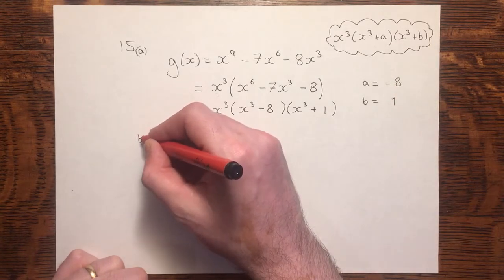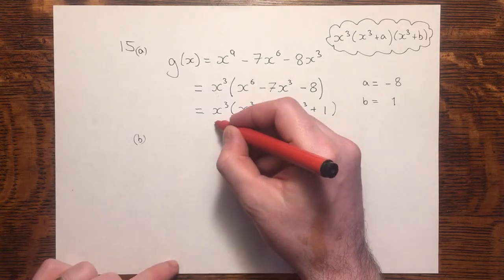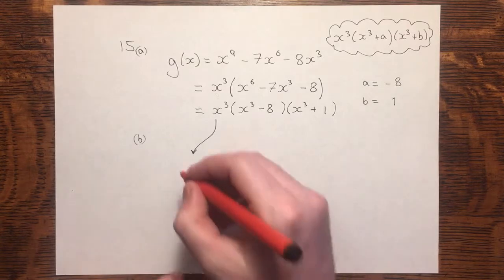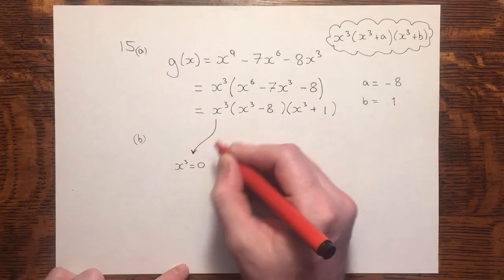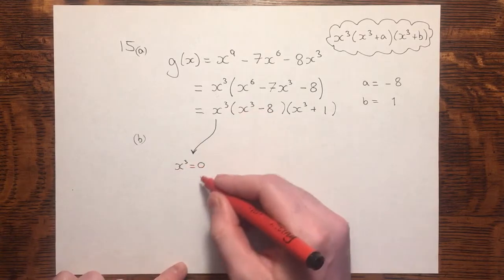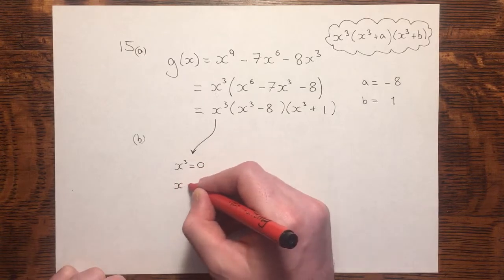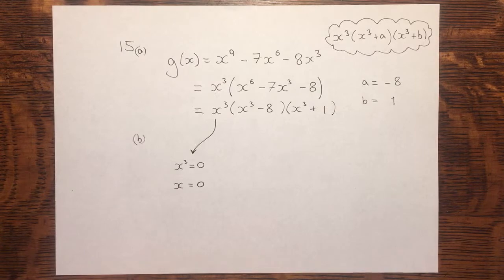In part b, the question says, hence find the three roots of g of x. x cubed is one of the factors. Therefore, if x cubed equals 0, then we can solve for x. We know the factors equal 0 when we're finding the roots. Well, the cube root of 0 is 0, so we have x is 0.